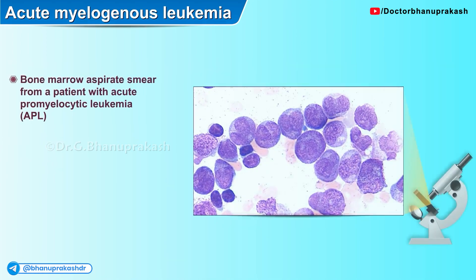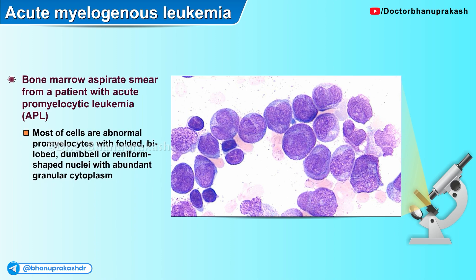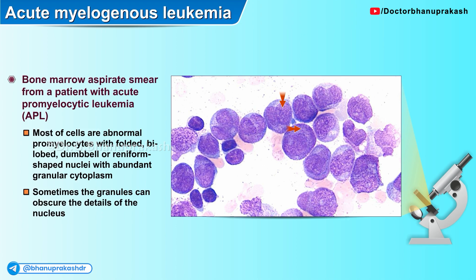Here is another bone marrow aspirate smear from a patient with acute promyelocytic leukemia. Most of the cells here are abnormal promyelocytes with folded nuclei; some cells show bilobed, dumbbell, or reniform-shaped nuclei with abundant granular cytoplasm. Sometimes the granules can obscure the details of the nucleus.